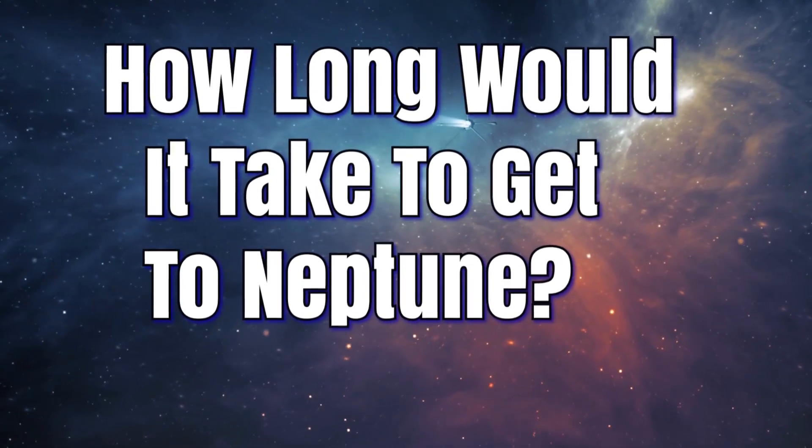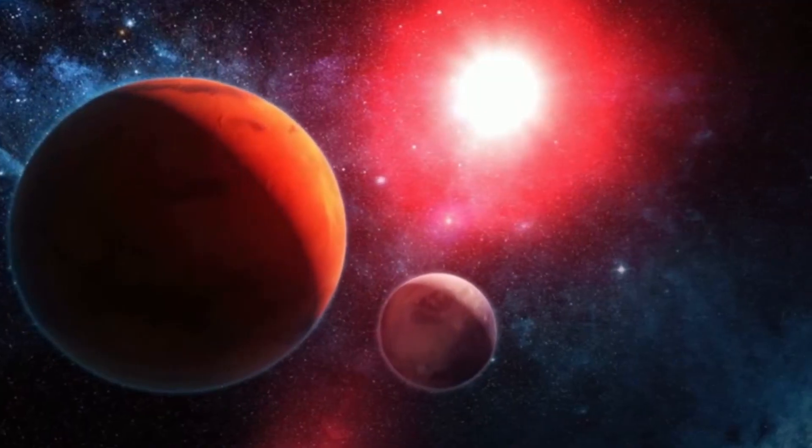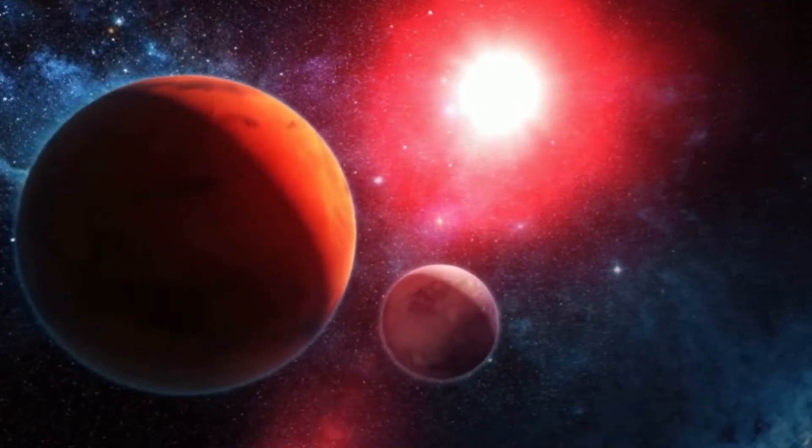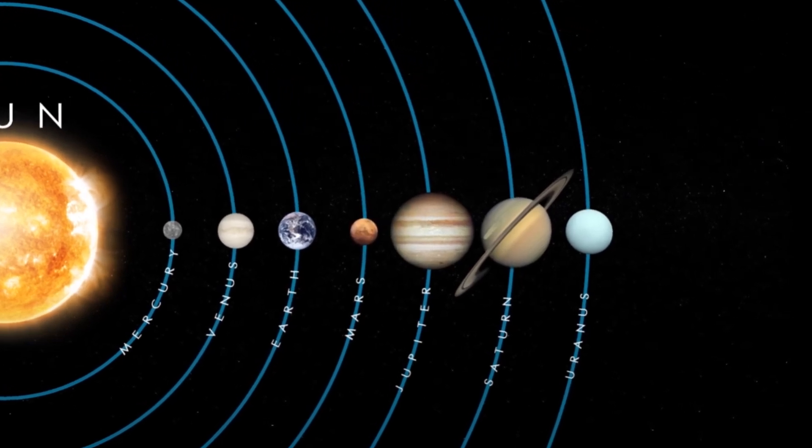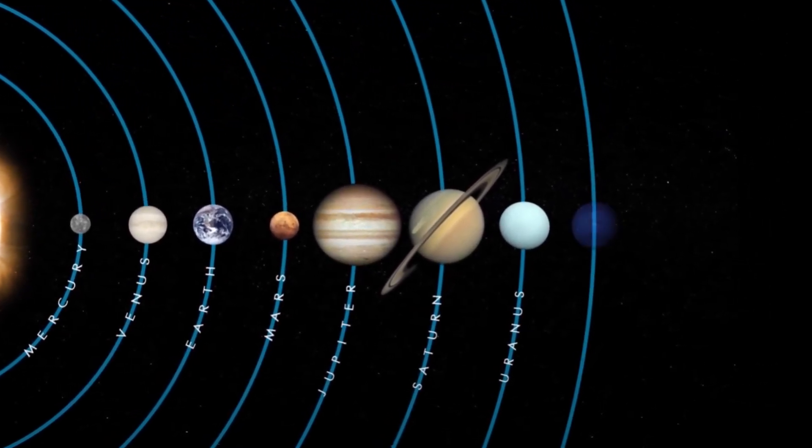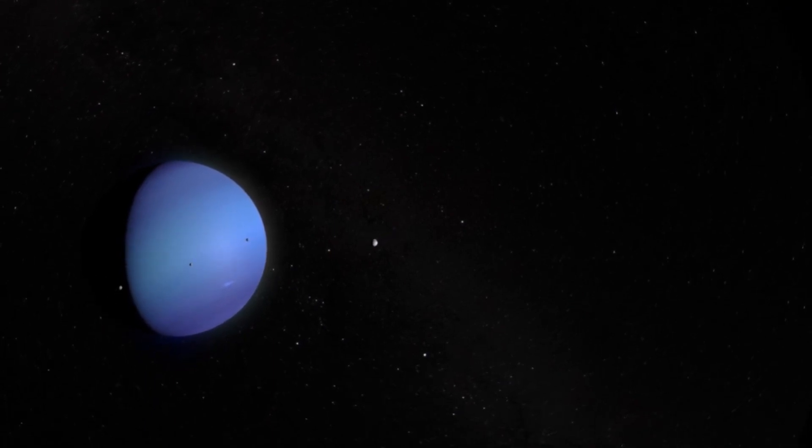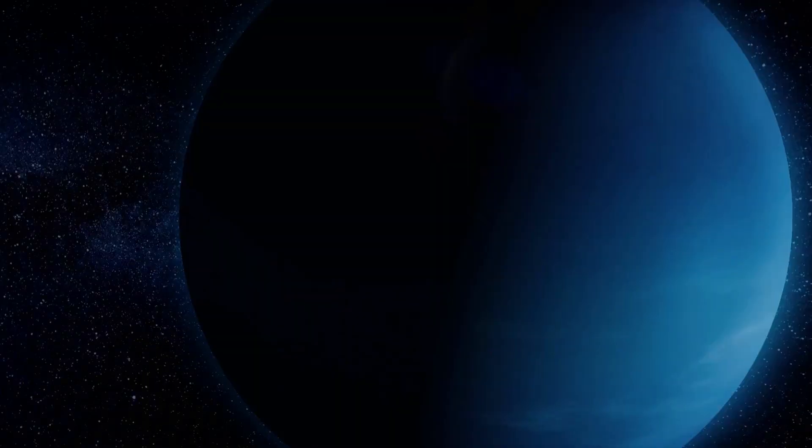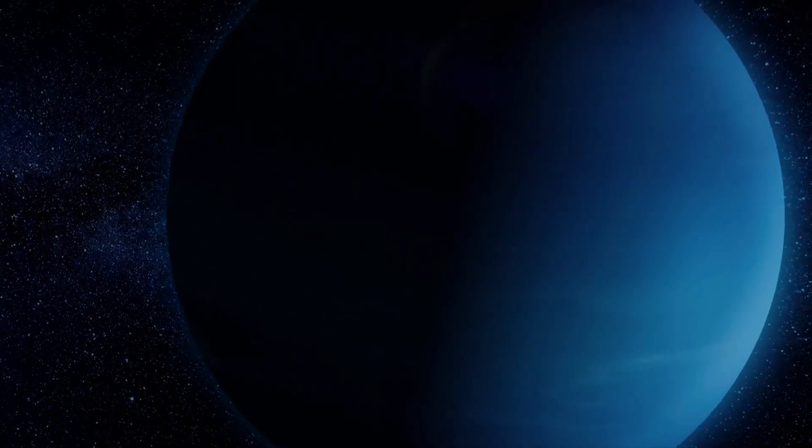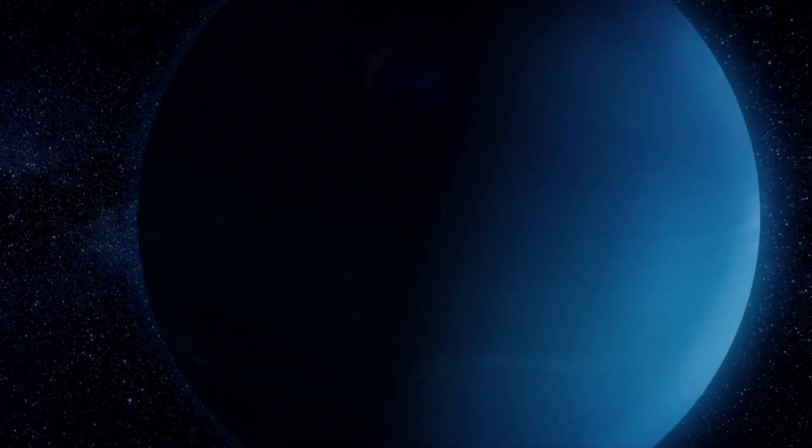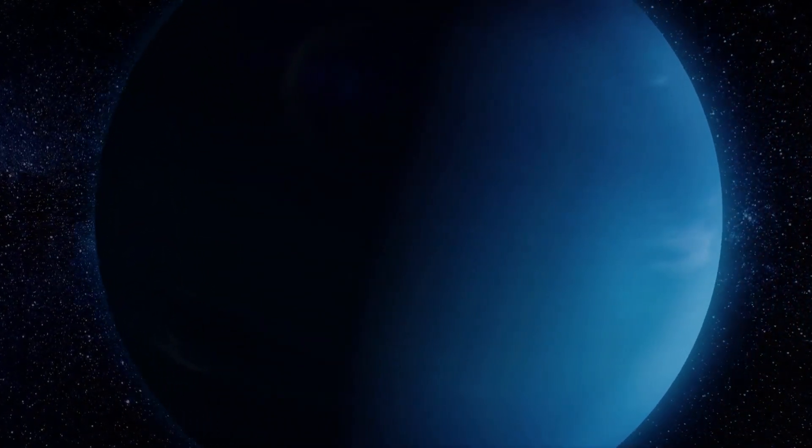How long would it take to get to Neptune? After the demotion of Pluto to dwarf planet, Neptune takes the crown as the most distant planet in our cosmic neighborhood. This ice giant and its sibling Uranus are a true wonder of our solar system. It was even discovered in the modern era, making it a relatively new addition to our understanding of the universe.